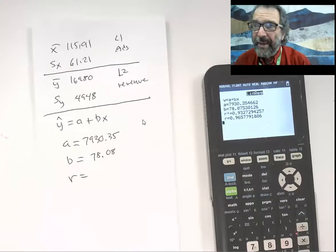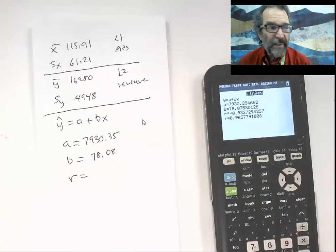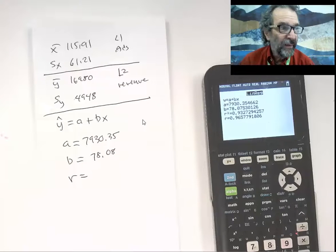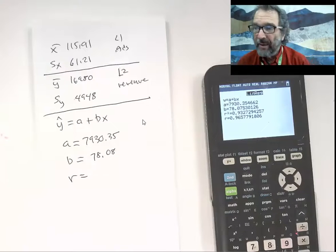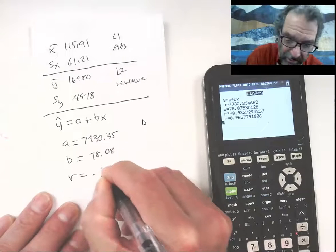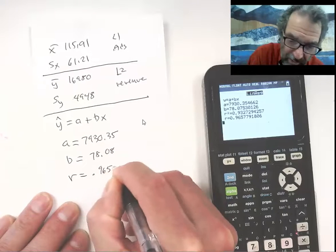So when we drew it by hand, we got 80, so we didn't do such a bad job. This is supposed to be the best fitting line. And then here's the r, .9658, say it like that.